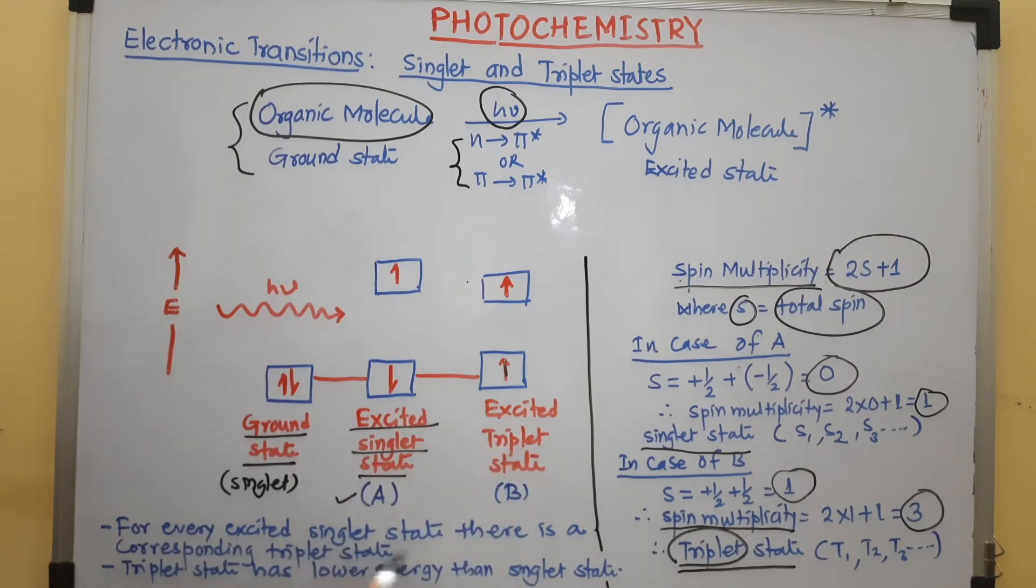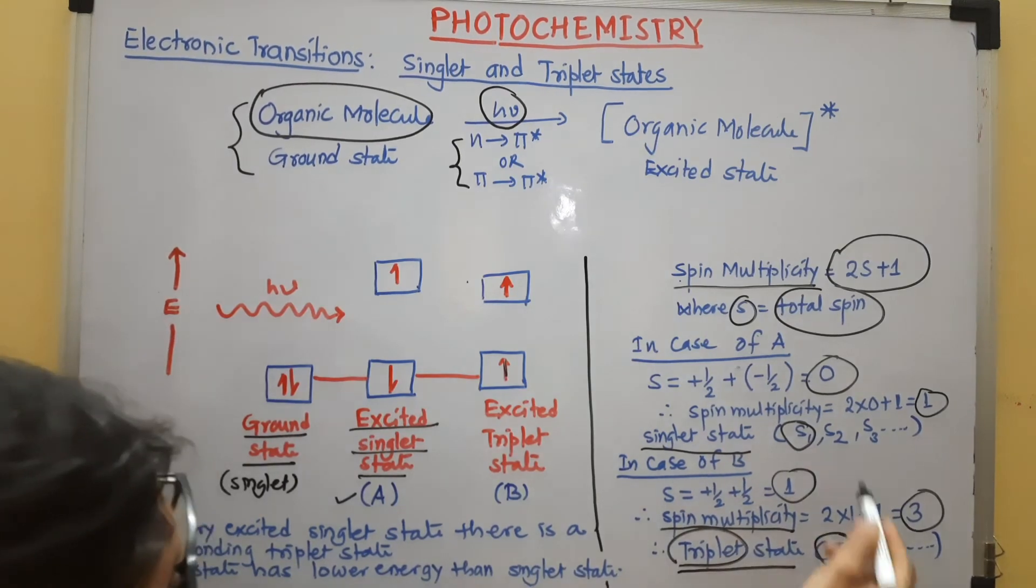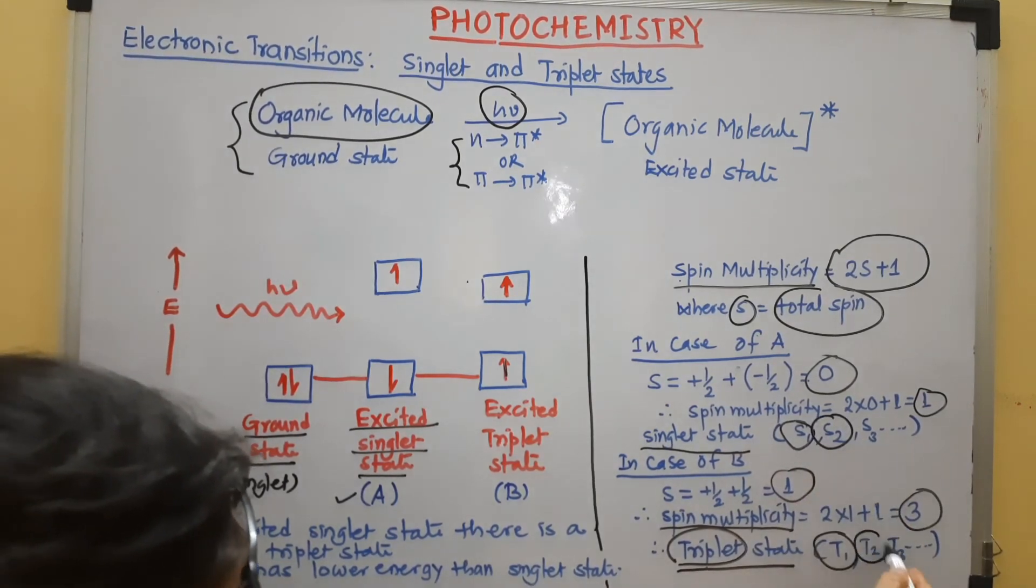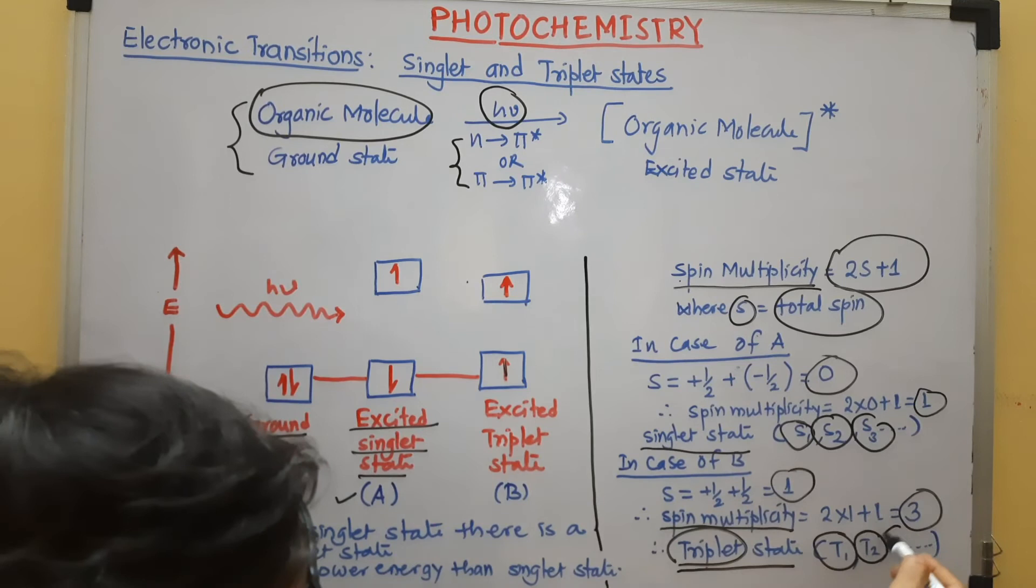Every singlet state, there is a corresponding triplet state. For example, if S1 is there, then T1 is there. If S2 is there, T2 is there. If S3 is there and T3 is there.